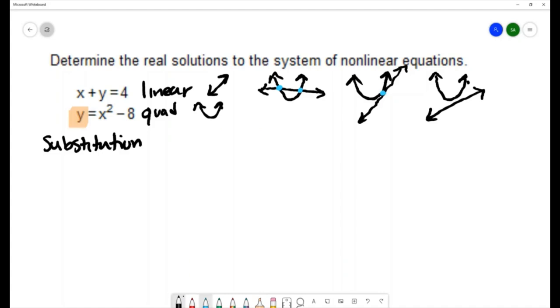So I'm going to solve this with substitution. The first step was already done for us, the equation is solved for y and I want to substitute that into the other equation for y, and that's because this equals y. So when I make that substitution I'll have x plus x squared minus 8 equals 4.